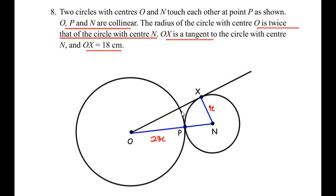OX is a tangent to the circle with center N. A tangent is a line which touches the circle externally at only one point — it cannot enter the circle. The length of OX is 18 centimeters. NX and NP are both radii of the circle with center N, so both equal r. Whenever a tangent touches a circle, it always makes a 90-degree angle with the radius, so we have formed a right-angled triangle, right-angled at point X.